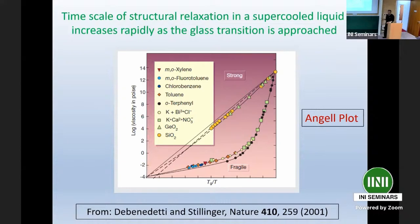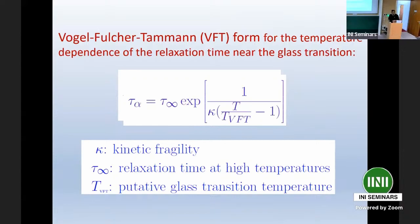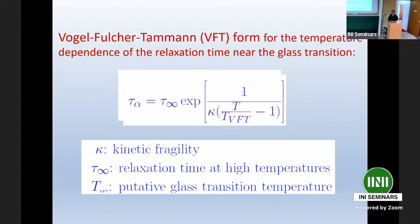The fragile liquids are what I'll be interested in - why does one see non-Arrhenius behavior? A very popular form to describe this growth of relaxation time in fragile liquids is the Vogel-Fulcher-Tammann form, which predicts a divergence of viscosity at a finite temperature called T_VFT. When we talk about glass transition in subsequent slides, numbers quoted from simulation are typically obtained by fitting data to this form, which gives you a temperature at which the viscosity supposedly diverges - that temperature is called the glass transition.